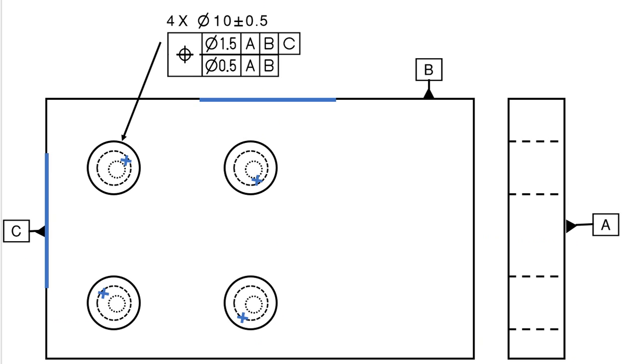But what if I had this tolerance instead? Okay. There's no B datum here. The previous one that we just looked at, there's a B on the lower tier. Here, no B. So that means we're only constraining the rotation with respect to A.